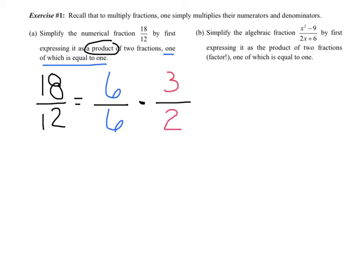And here's the part I can cancel. 6 over 6 is 1, so 18 over 2 is really equal to 3 over 2. Or sorry, 18 over 12 reduces to 3 over 2. Let's try another example, B.